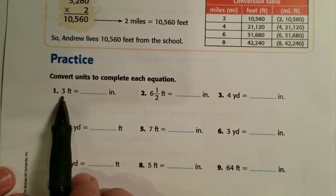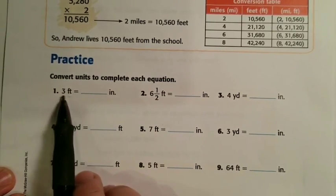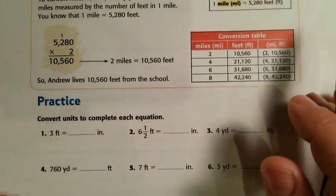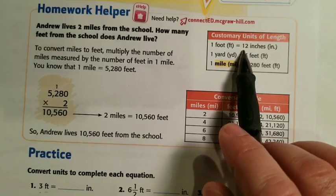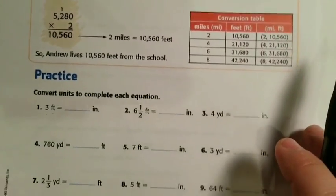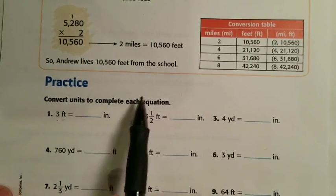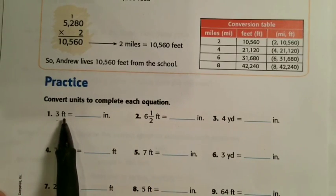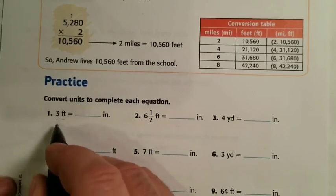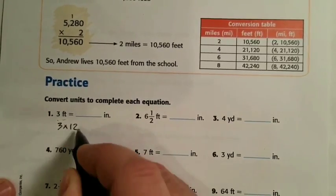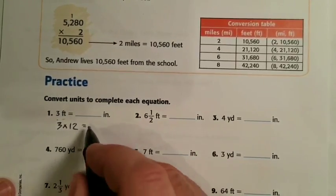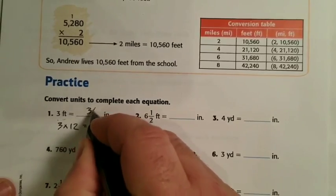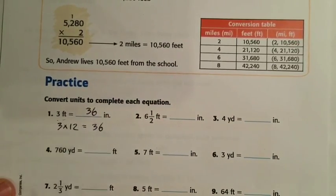Number one is asking us to convert three feet to inches. According to our table, every foot is 12 inches long. So if one foot is 12 inches, then three feet would be three times more than that — we do three times 12, which is 36. So three feet equals 36 inches.